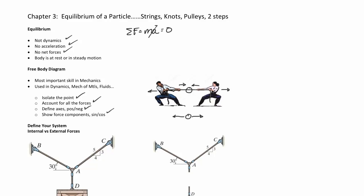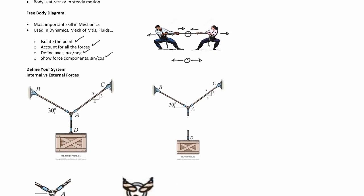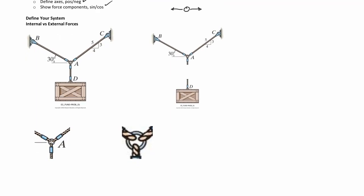Let's look at our first problem. We have a box that weighs something and is being suspended by one cable. Point A — a little ring — has three ropes attached to it. Which way are the forces going? You can imagine there's some weight in the box pulling down and some force in the rope going up. If you look at just the box, there's a weight going down but a tension force in that rope pulling up.